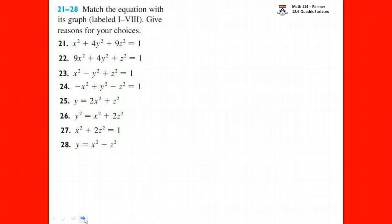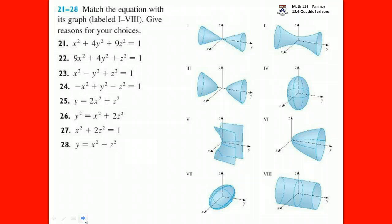Now we know all our different shapes. Here's an example question from the textbook where you're given eight equations and asked to match them to eight different graphs. These equations might not be in standard form, so we may need algebra to put them there. First up is question 21: x squared plus 4y squared plus 9z squared equals 1.